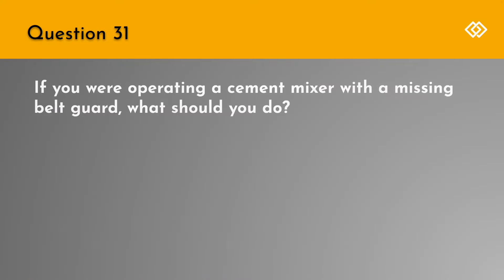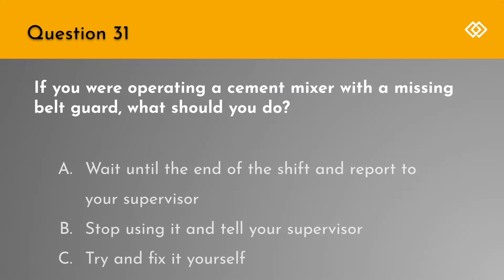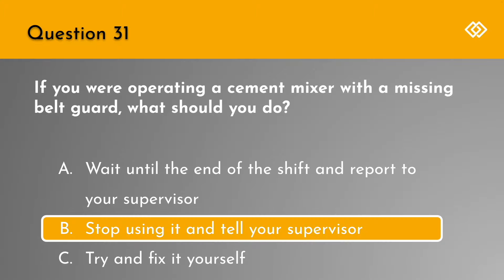Question 31. If you were operating a cement mixer with a missing belt guard, what should you do? A. Wait until the end of the shift and report it to your supervisor. B. Stop using it and tell your supervisor. Or C. Try and fix it yourself. The correct answer is B. Stop using it and tell your supervisor.